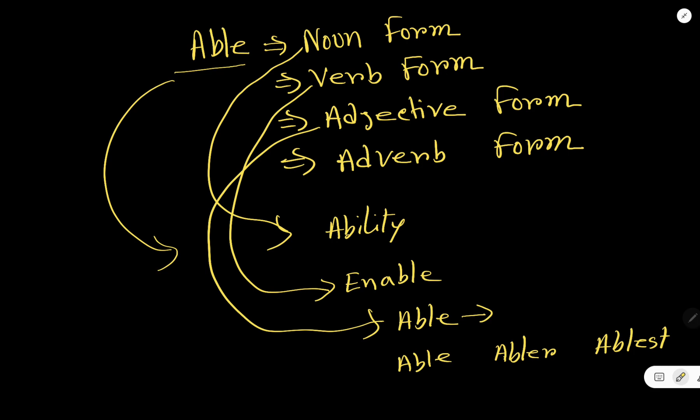Now at last we will learn the adverb form of the word able. The adverb form of the word able is ably, A-B-L-Y. Just you have to deduct E and you have to add Y. Ably. This is the adverb form.